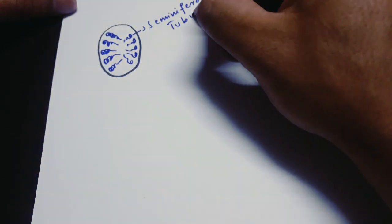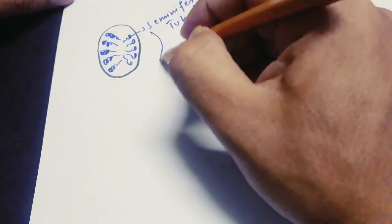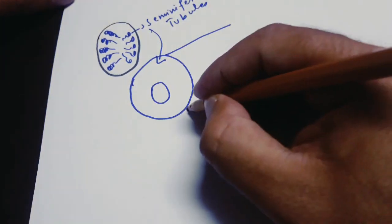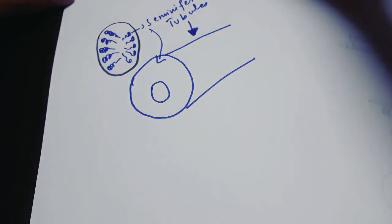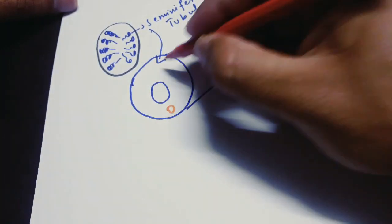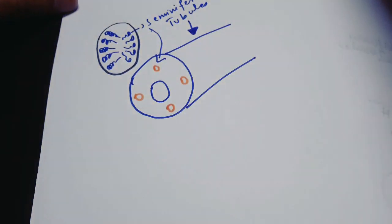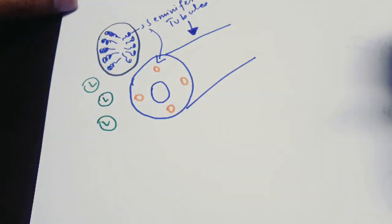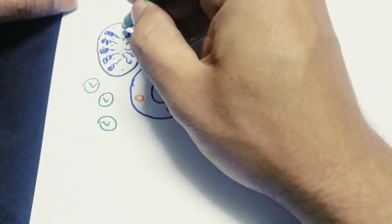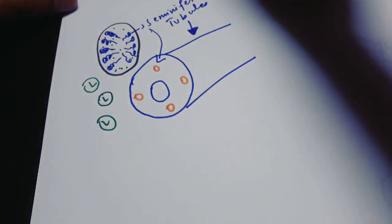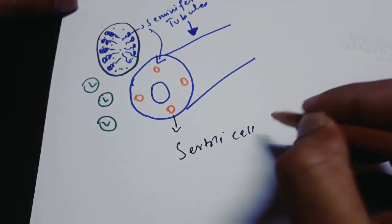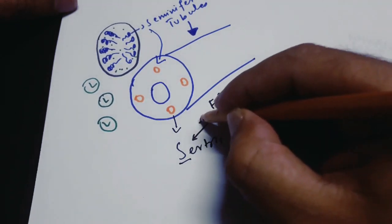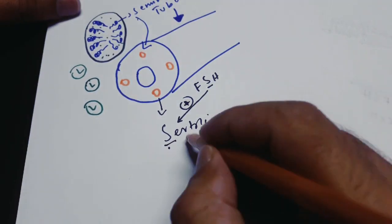The testes contain seminiferous tubules. Let's draw one seminiferous tubule — this is the lumen, and this as a whole is the seminiferous tubule. Inside the seminiferous tubules you will see Sertoli cells, and outside the seminiferous tubules the Leydig cells are present. FSH acts on Sertoli cells.